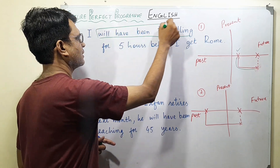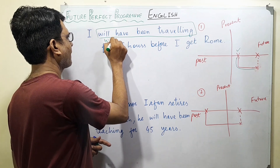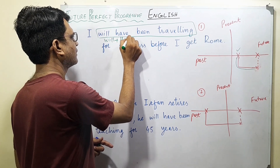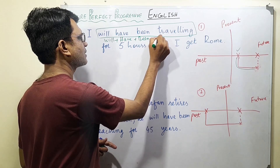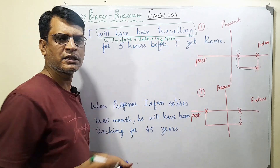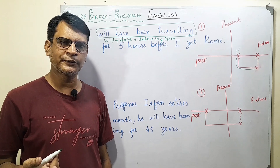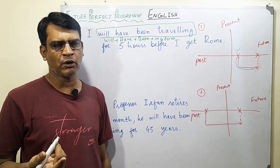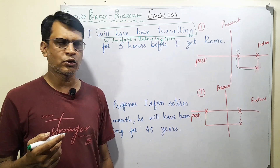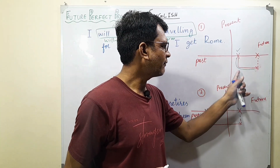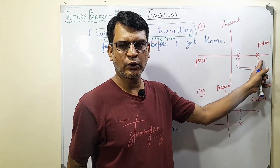This is the structure: will + have + been + the V-ing form, which is called the fourth form of the verb, also known as the continuous form or "-ing form." So: I will have been traveling for five hours before I get to Rome — that is the duration of five hours before I arrive.